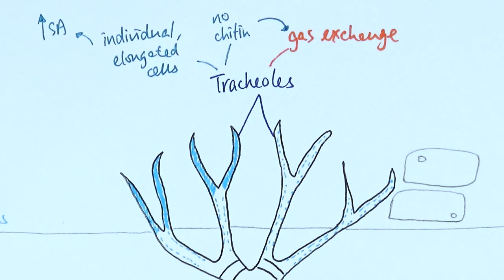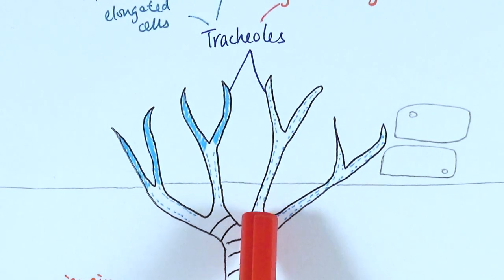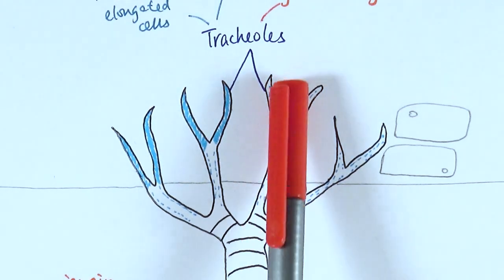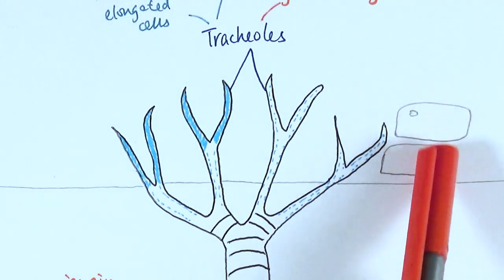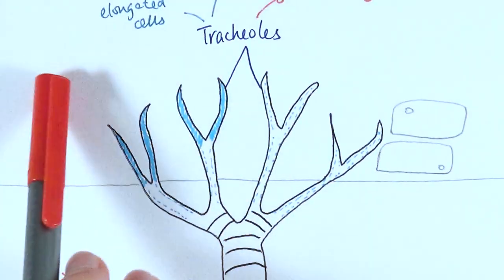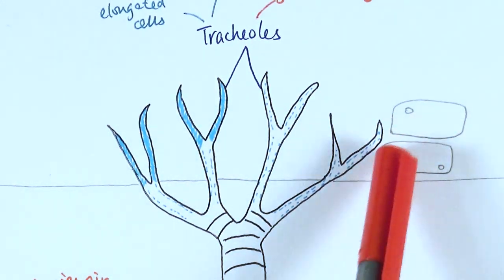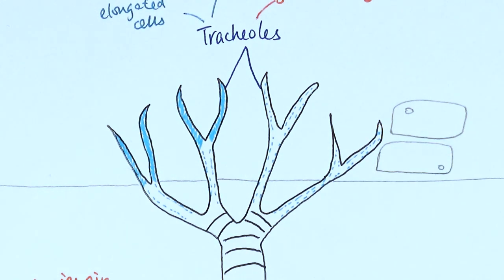And if we look closely into the actual tracheoles, they're actually lined with water. There's a thin layer of water on the walls of the tracheoles and actually that means that gases can easily dissolve in it and diffuse across the membrane to the cells around. So these are signifying the muscle cells. Hopefully just these two will make it clear.